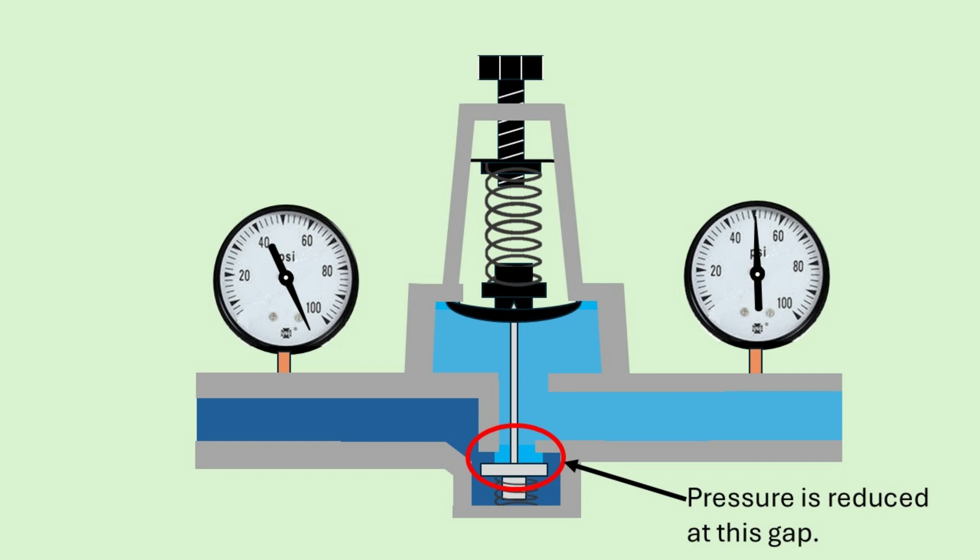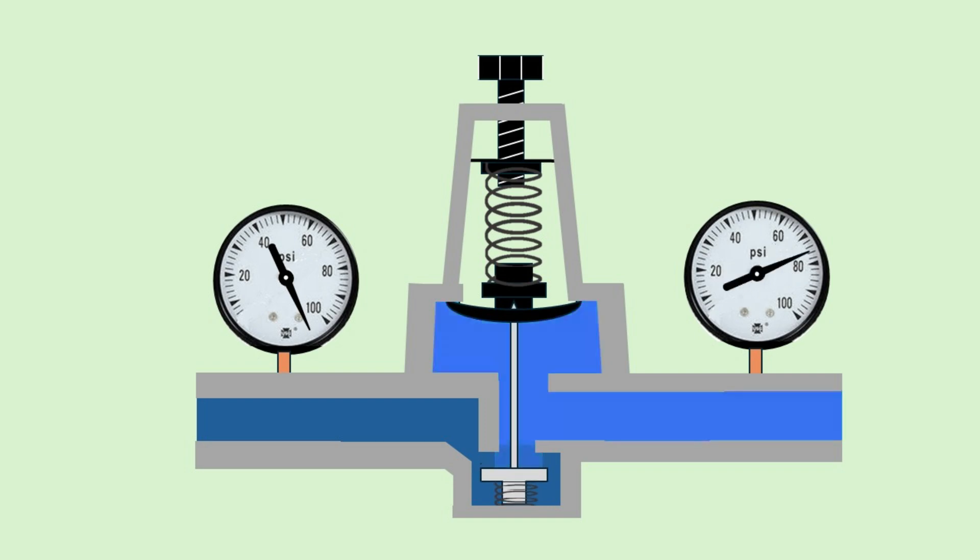Think of it like a resistor in an electrical circuit. Just as a resistor reduces the flow of electricity or current, the gap reduces water pressure by restricting the amount of water flowing through it. The size of this gap directly affects the outlet pressure.